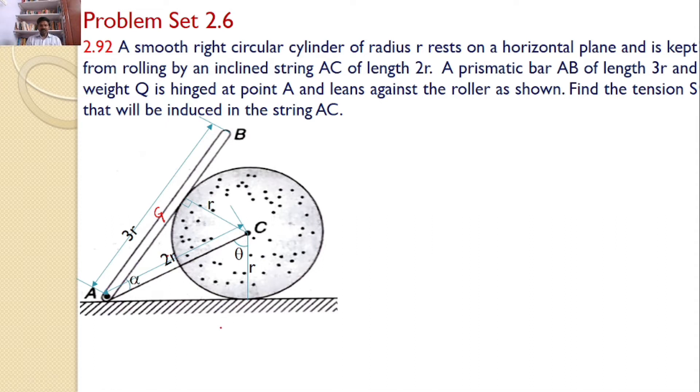Let theta is the angle made by AC with the vertical. Let this angle is alpha. Consider the right angle triangle ACF. Cos theta is equal to adjacent side that is R divided by hypotenuse that is 2r. Hence, I can find theta is equal to 60 degrees.